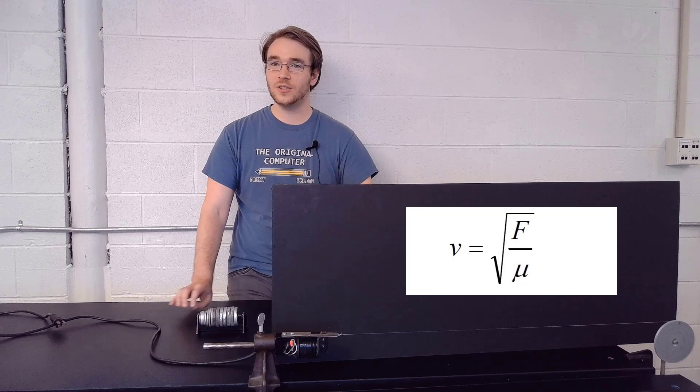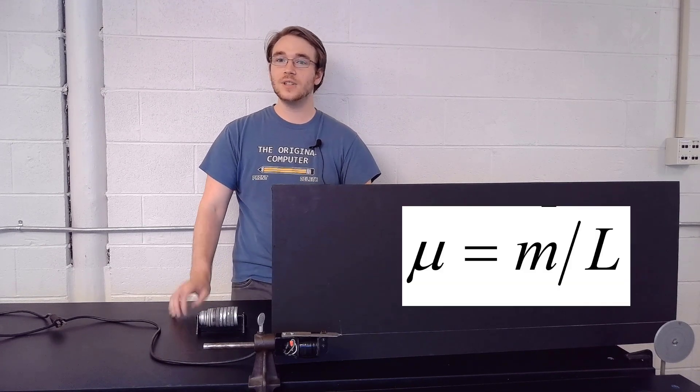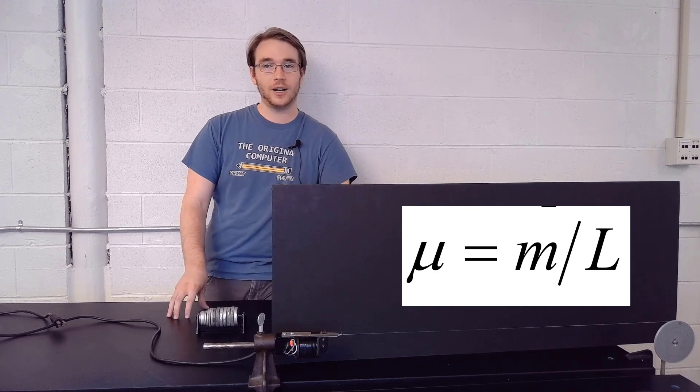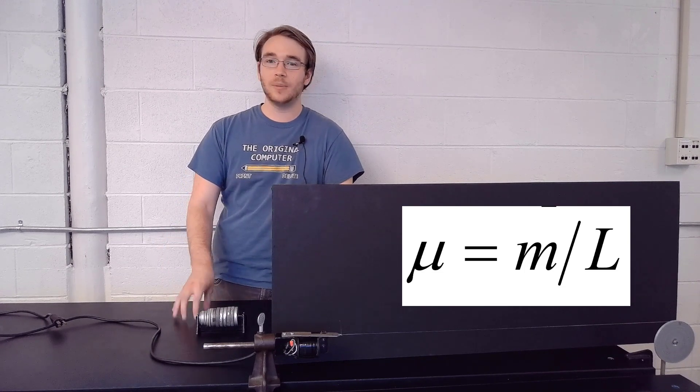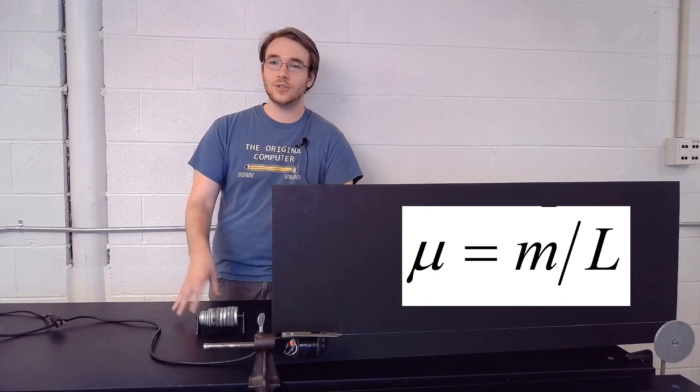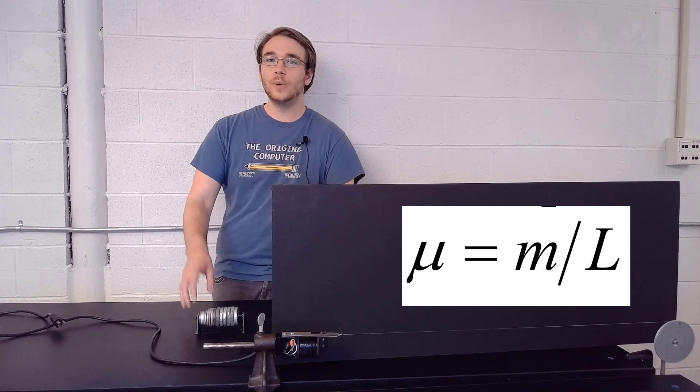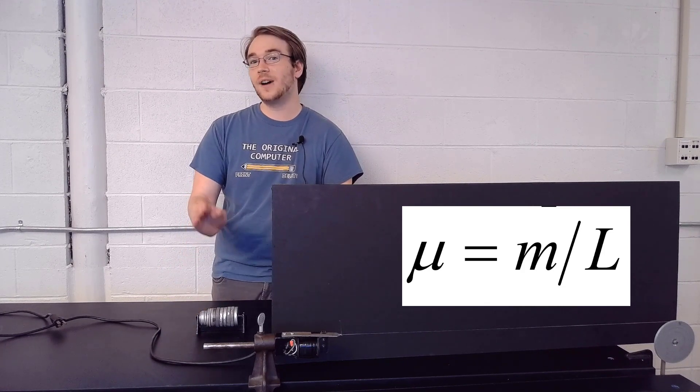F is the tension in the string measured in newtons and μ is the linear density which equals the mass per unit length of the string and is measured in kilograms per meter. If l is the length of the string and m is the mass, we can write μ = m/l.